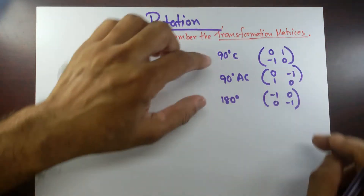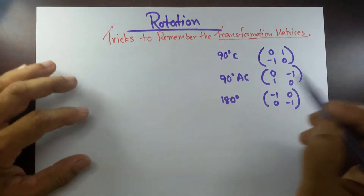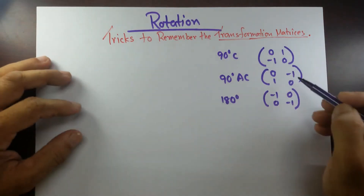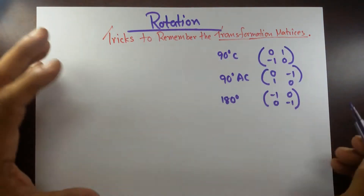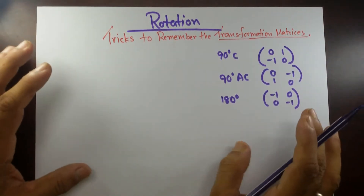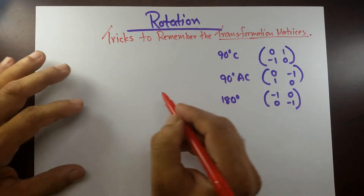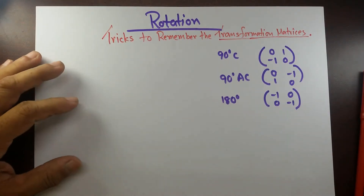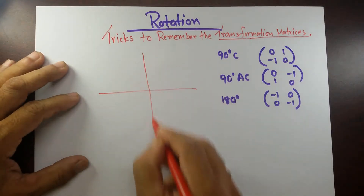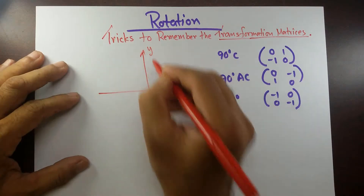Now, in every matrix you can see 0 and 1, but the problem is the placement — where should be 0, where should be 1, where should be minus 1, where should be plus 1. This is the most difficult thing for students. The way I do it, just think like this: draw coordinates, the grids, x and y grids.